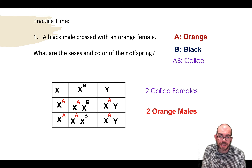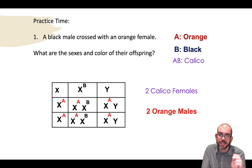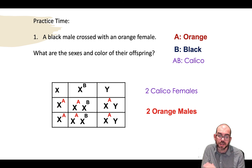We can use the same methodology for any sex-linked trait. You just put the trait as an exponent above the sex chromosomes and solve, like you would a normal monohybrid cross.